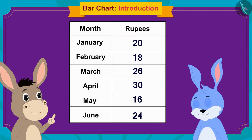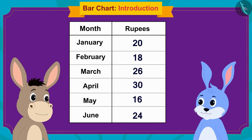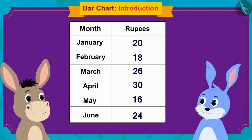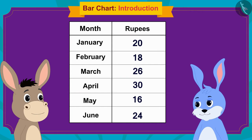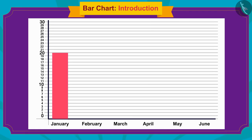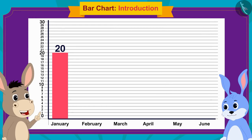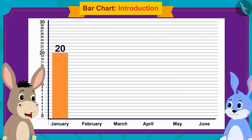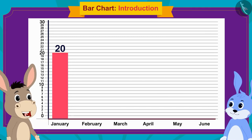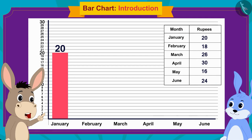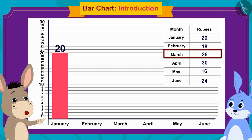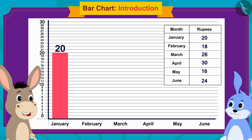Bholla asked, 'Bunny, can you look in your table and tell me how much money you saved in January?' Bunny replied, '20 rupees.' Bholla then made a thin rectangle over the month of January whose height went up to the number 20 on the vertical line. He explained, 'We have to make thin rectangles on the horizontal line for the amount saved in each month, and the height of each rectangle will be the same as the amount saved in that month.'